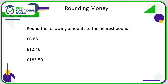Rounding money — we want to round to the nearest pound. Remember: look at the first decimal place. If that digit is five or more, round up; otherwise round down. In this example we've got £6.85 — the first decimal place is 8, which is greater than five, so the 6 rounds up to 7. To the nearest pound, that is £7.